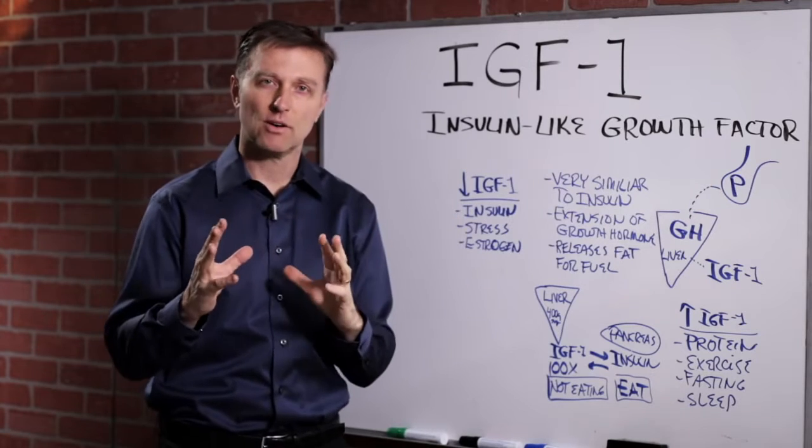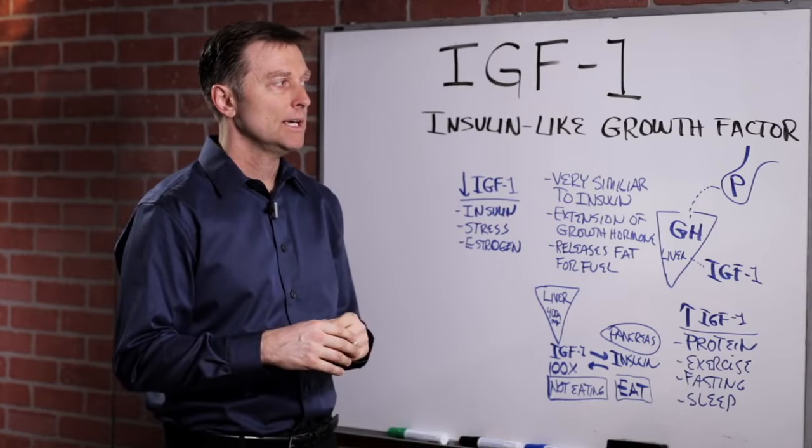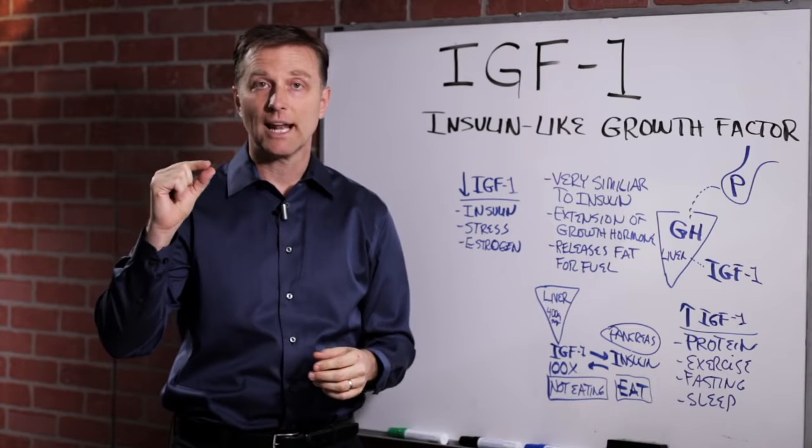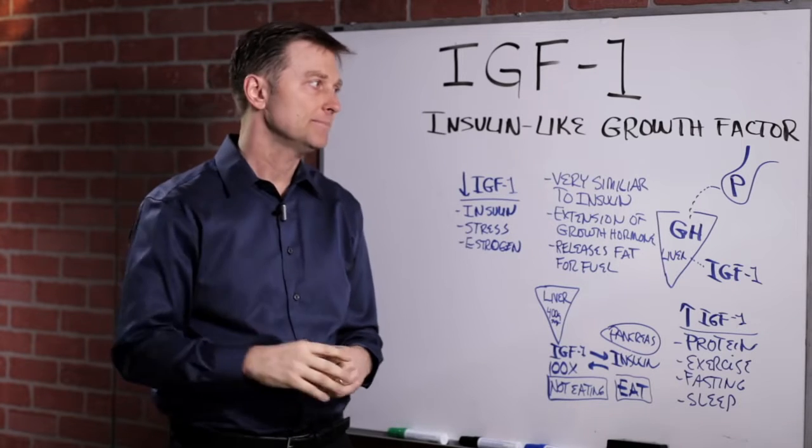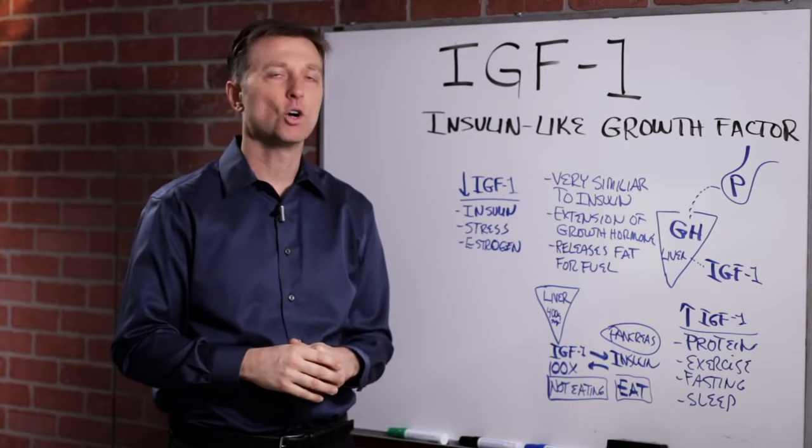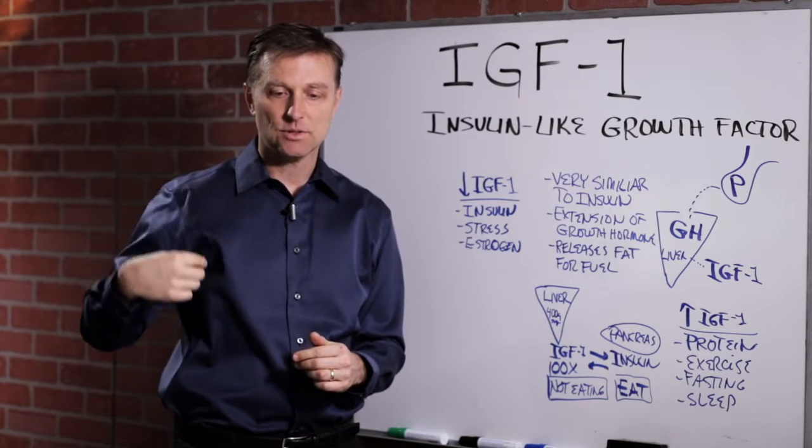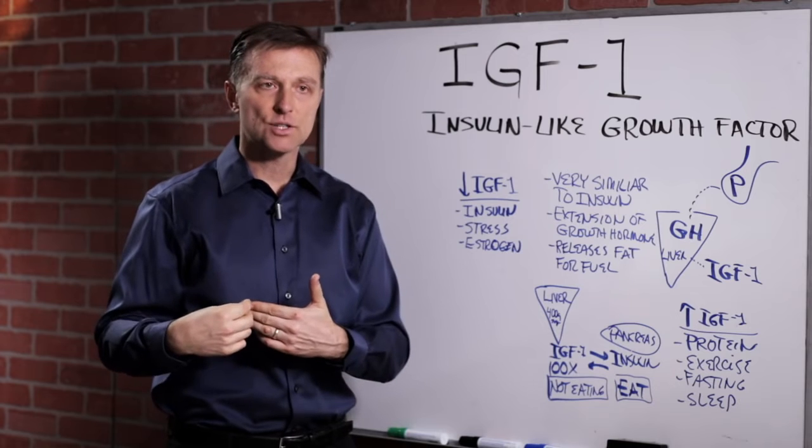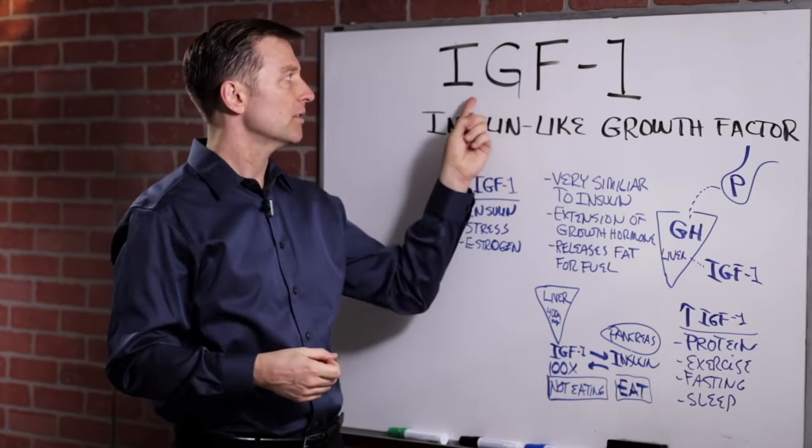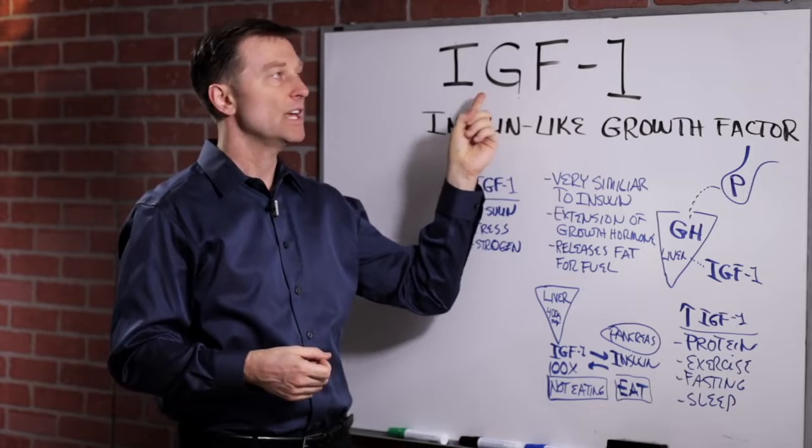Let me give you some background on what this hormone is. In the brain, you have this little gland called the pituitary. The pituitary makes growth hormone. Growth hormone is sent down to the liver, where the liver will trigger this hormone to be produced, IGF.